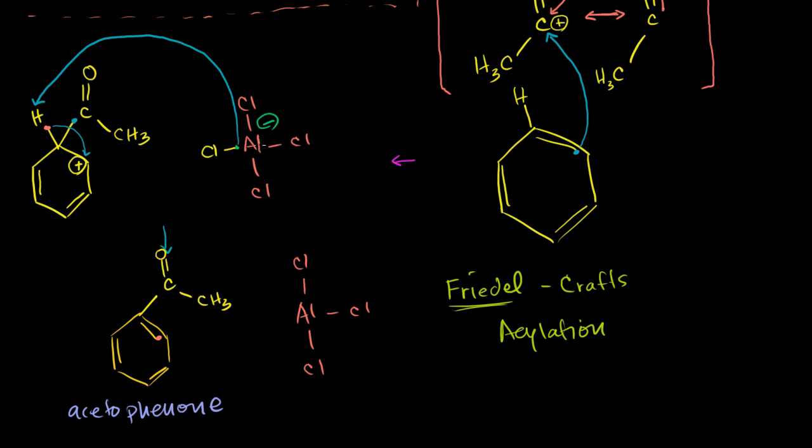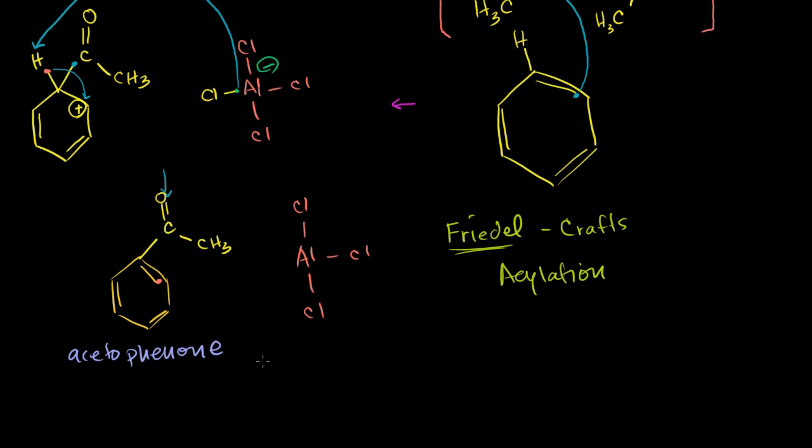So the aluminum lost the chlorine. This benzene ring lost a proton and was able to take back that electron. And I forgot to draw the hydrogen and the chlorine—so that results in hydrogen chloride.